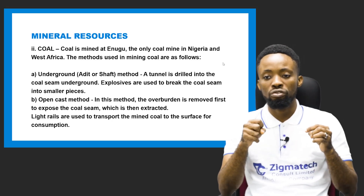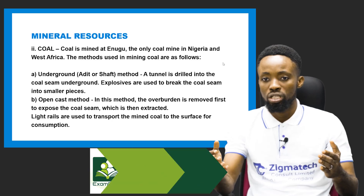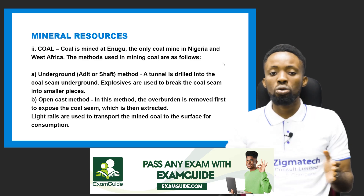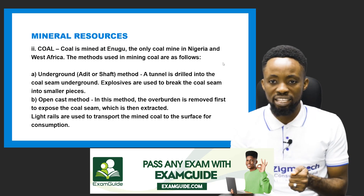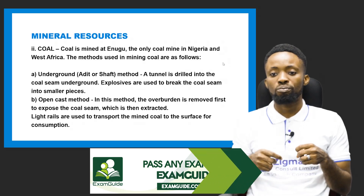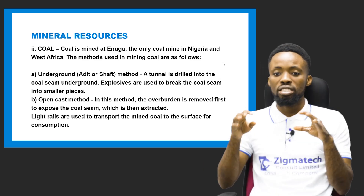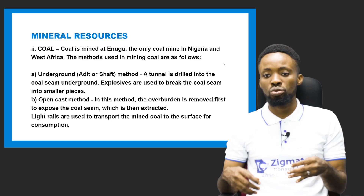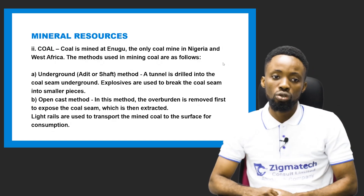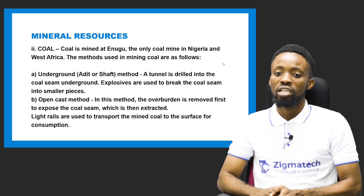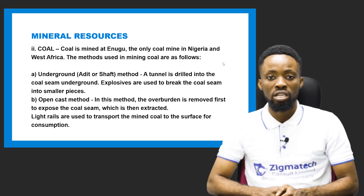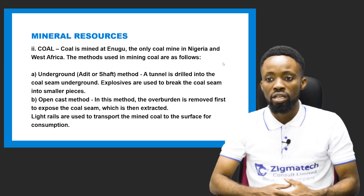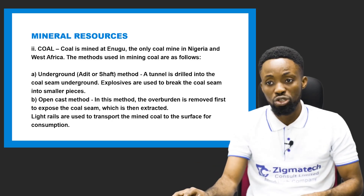The second method of mining coal is called the open cast method. For the open cast method, they first remove the overburden to expose the coal seam below. When the coal seam is exposed, it is then extracted. They use light rails to transport the coal that is mined to the surface for consumption. In places where the open cast method is used, you can see rails transporting coal down to the surface where further purification processes are carried out.